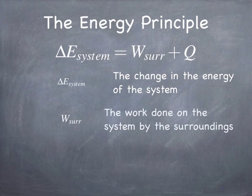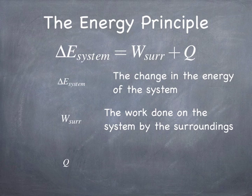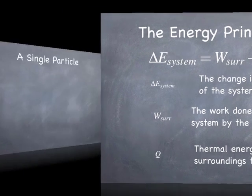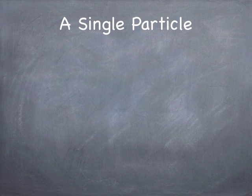Work is something we need to define, but the point is the surroundings can do work on the system, and doing work changes the energy of the system. Although we're not going to do much with this in chapter 6, it's worthwhile to point out that you can also change the energy of the system by having thermal energy flow from the surroundings to the system due to temperature differences. That's something we'll hit more a little bit later in the course, but it's an important part of the energy principle.